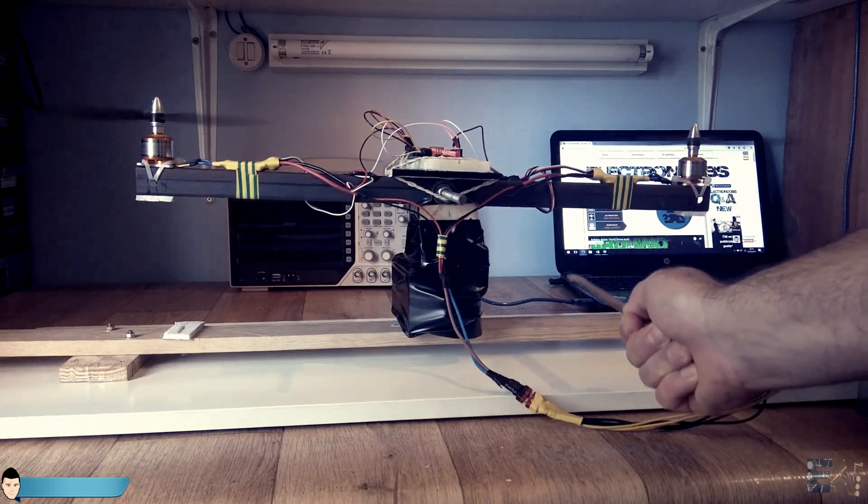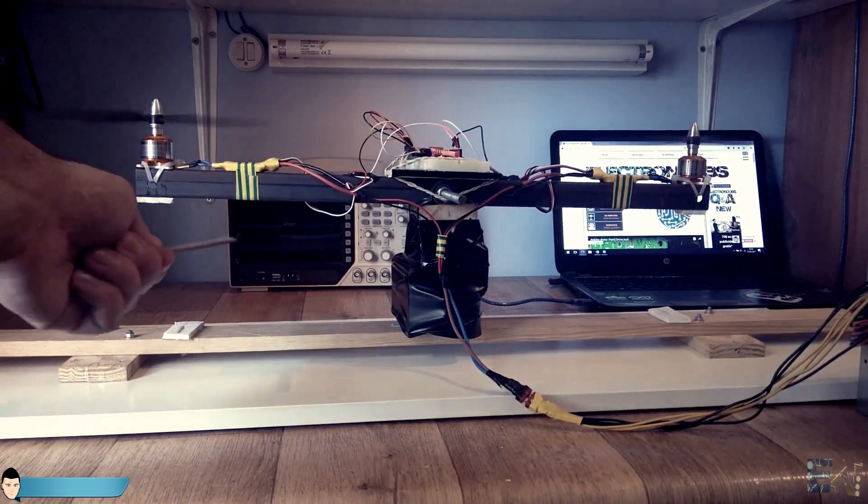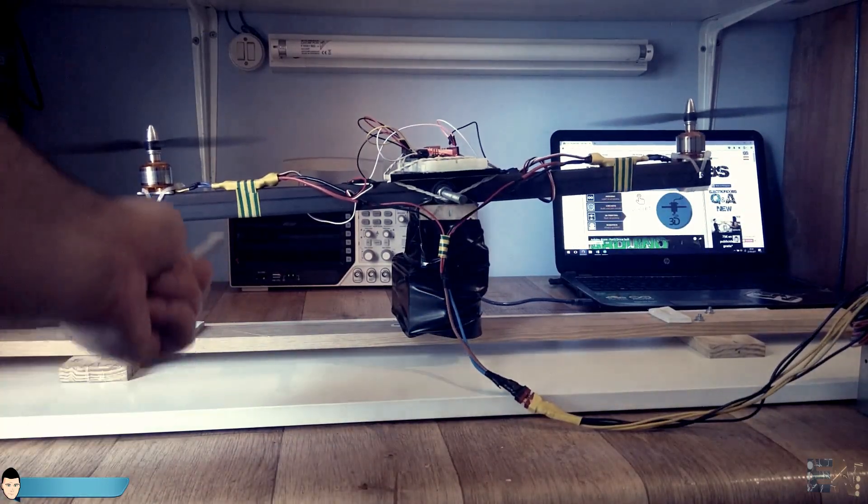In next videos, we will see how to adapt this code for our flight controller and for two axes. Also, how to change the desired angle depending on the received values from the radio controller of the drone.